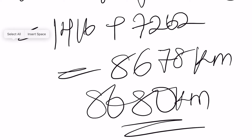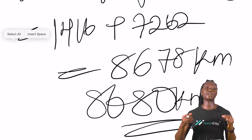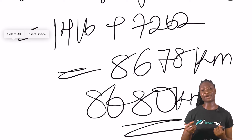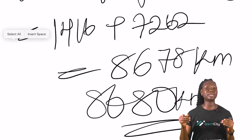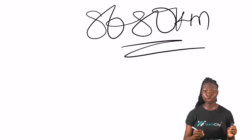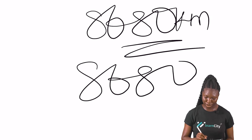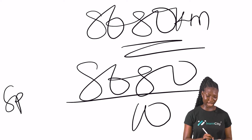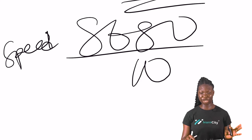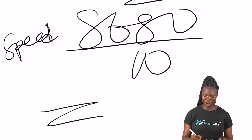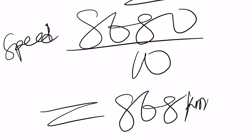For the average speed of the aircraft, we divide the total journey distance by the total time. The time from P to Q was 3 hours and from Q to R was 7 hours, giving a total time of 10 hours. So average speed = 8680 ÷ 10 = 868 kilometers per hour.